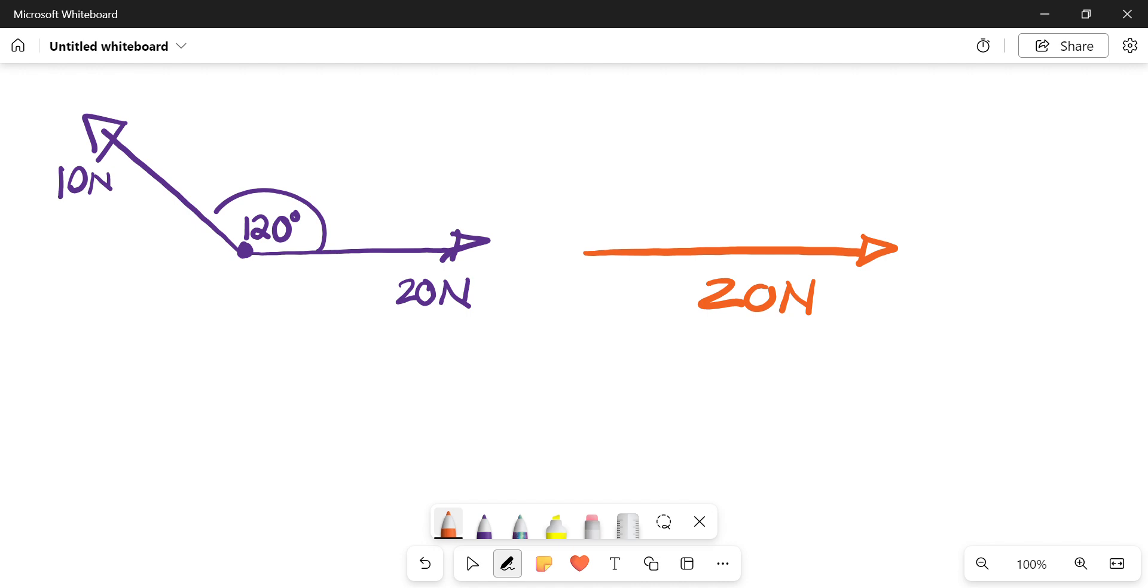Since you already start with the horizontal one that has a magnitude of that 20 newtons, then I know that I'm going to start with the diagonal one somewhere here, and that one is of 10 newtons. Then I know that I'm trying to calculate what is essentially happening between these two, and this is my assumed direction.